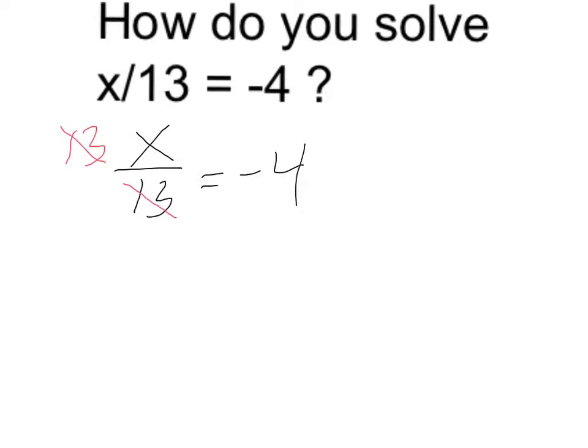Of course, if I multiply the left side by 13, I have to do the same to the right. So x is going to be negative 4 times 13, which is equal to negative 52.